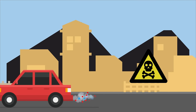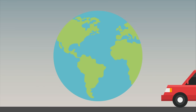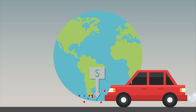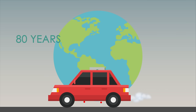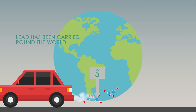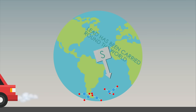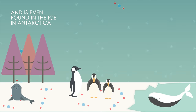It has taken until the 21st century to get rid of all the lead in petrol globally, but for 80 years lead from car exhausts has been carried around the world and is even found in the ice in Antarctica.